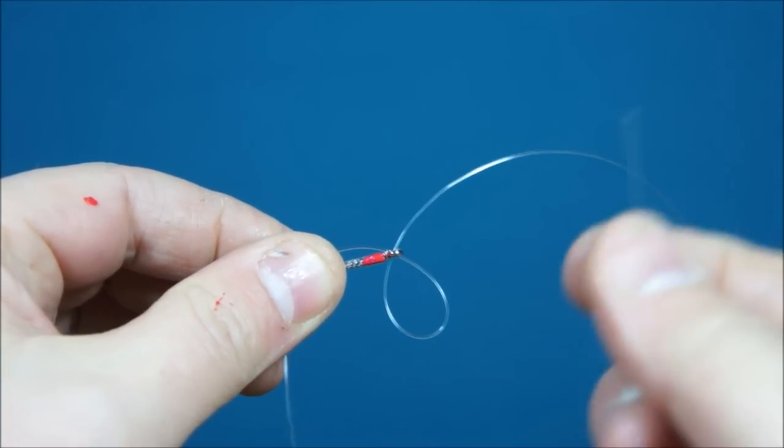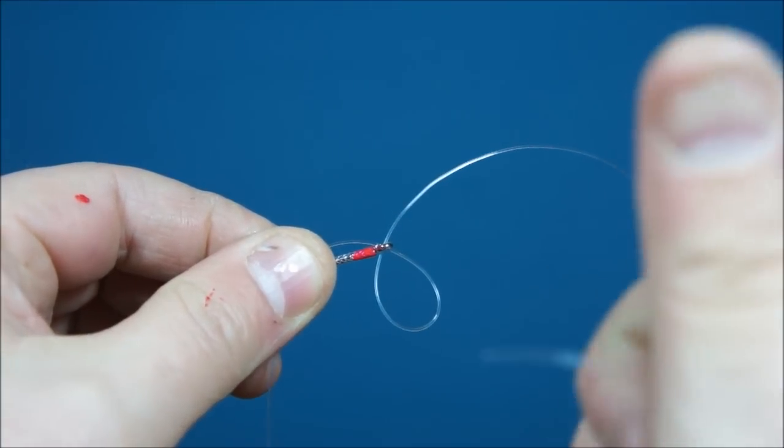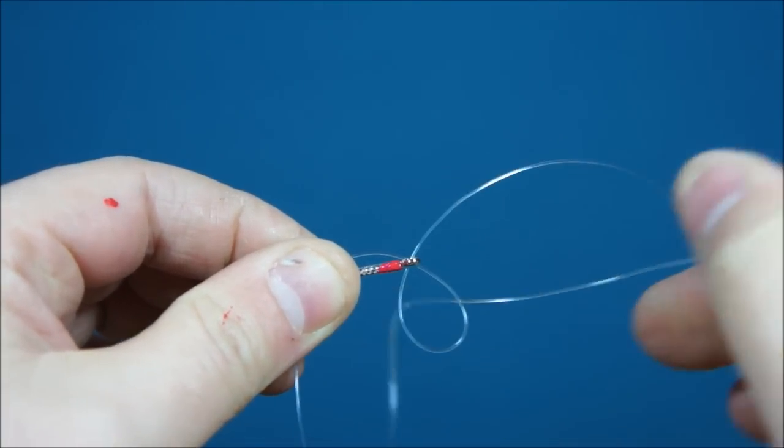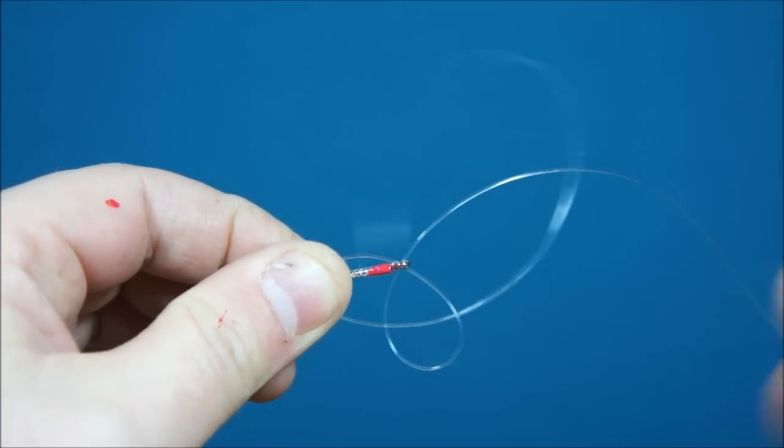So to make my second loop, I can see I've pinched this to the shank, I'm going to take my tag end and thread it through the first loop. There we go. Two loops.